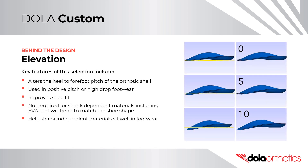Key features of this selection include: it alters the heel to forefoot pitch of the orthotic shell, which is used in positive pitch or high drop footwear to improve shoe fit. It is not required for shank dependent materials, including EVA, that will bend to match the shoe shape or shoe drop. It can, however, help shank independent materials sit well within footwear.